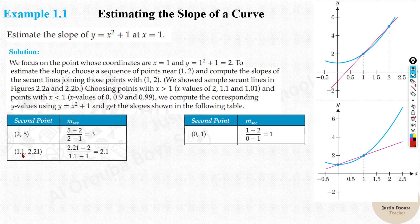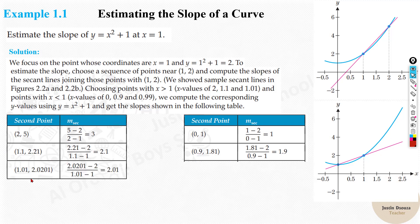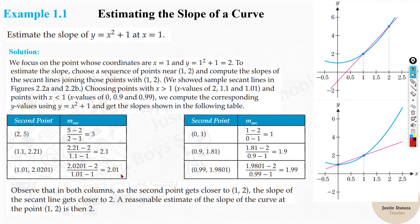We are going close to 1: from above, 1.1 then 1.01; from below, 0.9 then 0.99. As we use these points and solve for the slope, we can see both answers are almost the same — very close to 2. You can see 2.01 from one side and 1.99 from the other. Both sides are converging. This is how we solve by tables: take two values very close to the given x value and solve the slope formula.